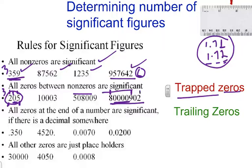This 2 is significant also, so every number in this number in the back is significant, and it would have eight significant numbers in it.